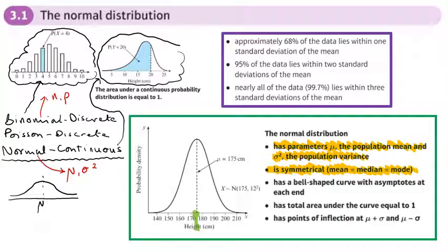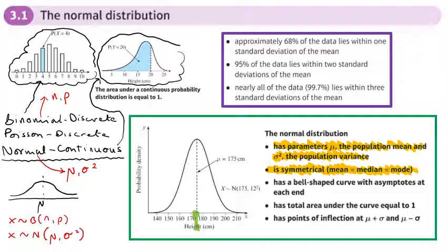Because we're interested in those two things, our notation is slightly different. Remember with the binomial distribution we'd have two numbers in brackets — n and p. With the normal distribution, the two numbers in the brackets will be the mean and the variance. Looking at the notation here, you can see it's telling us it's a normal distribution with a mean of 175 and a variance of 12 squared. What that also means is that the standard deviation is 12.